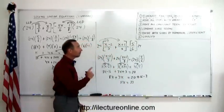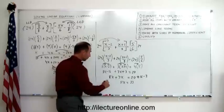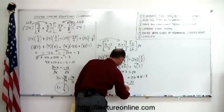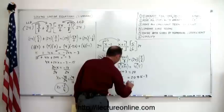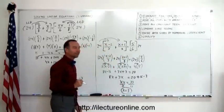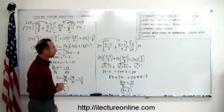Then we divide both sides by the numerical coefficient. Divide the left side by 11 and the right side by 11 — this cancels out, giving us x equals 33 divided by 11, which is 3. And that's the answer to our problem.